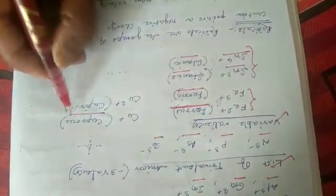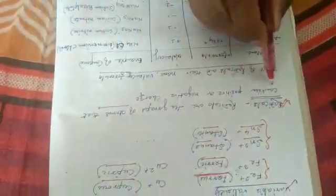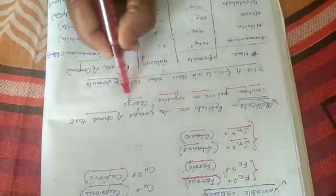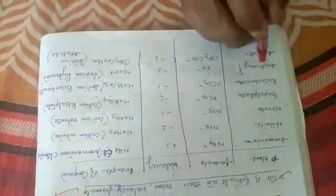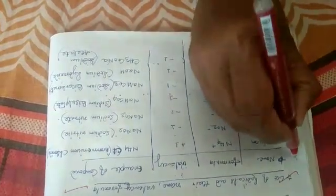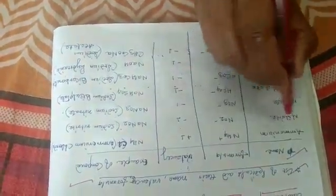Now radicals, what is a radical? Radicals are groups of atoms that contain positive or negative charge. Here we provide a list of radicals and their name and their valency. This is very important for you to write the name of chemical compounds.